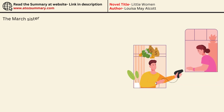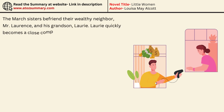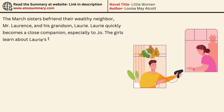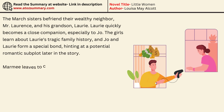The March sisters befriend their wealthy neighbor Mr. Lawrence and his grandson Lori. Lori quickly becomes a close companion, especially to Jo. The girls learn about Lori's tragic family history, and Jo and Lori form a special bond, hinting at a potential romantic subplot later in the story.